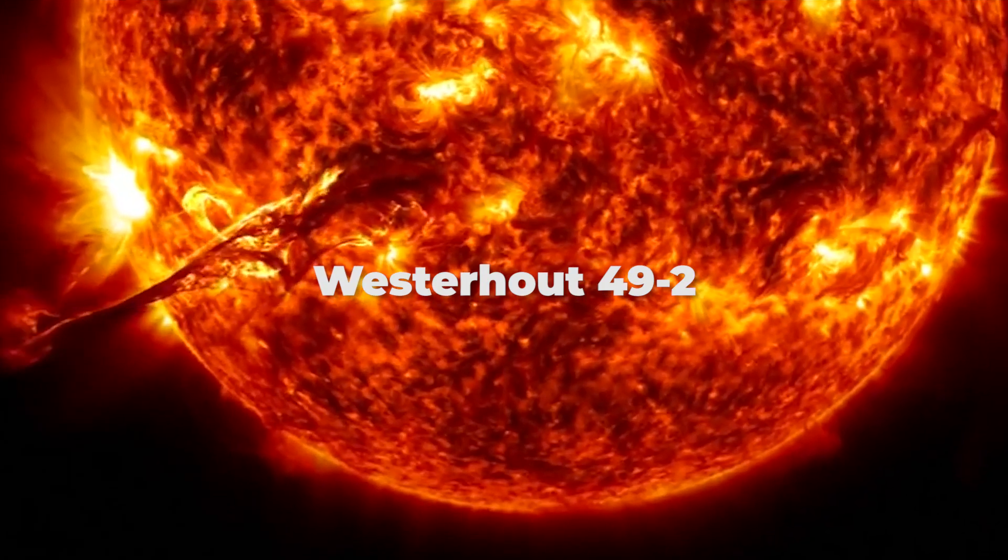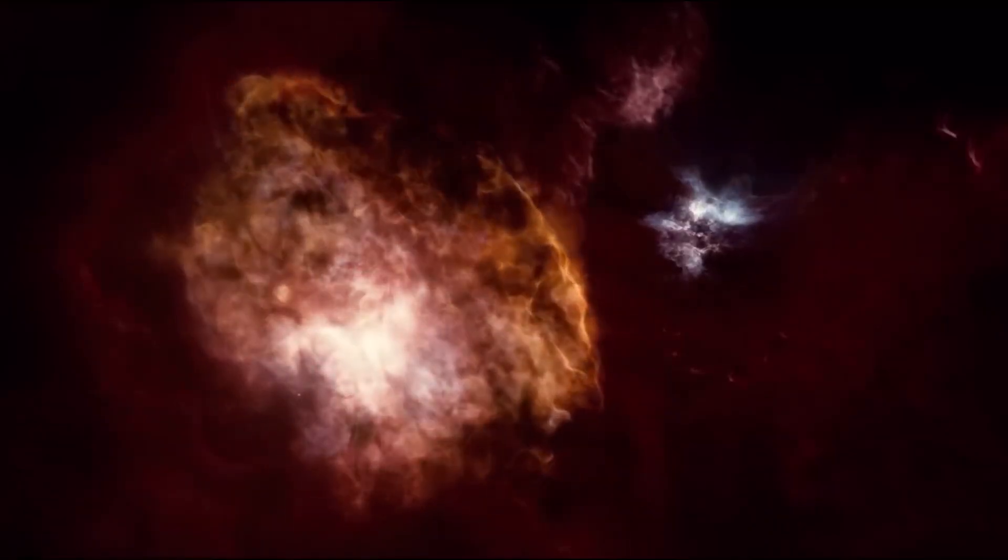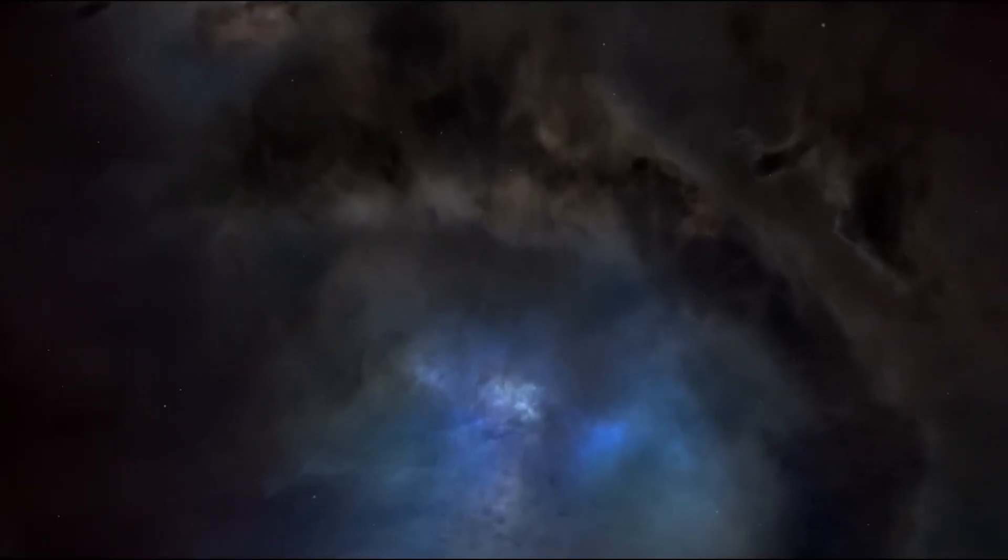Westerhout 49-2 is a star that lies in the heart of a giant cloud of gas and dust called Westerhout 49, located about 36,000 light-years away from us in the constellation of Aquila.